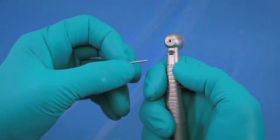To insert a burr into the handpiece, hold the handpiece as shown with your dominant hand, right or left, and do not press the button yet.